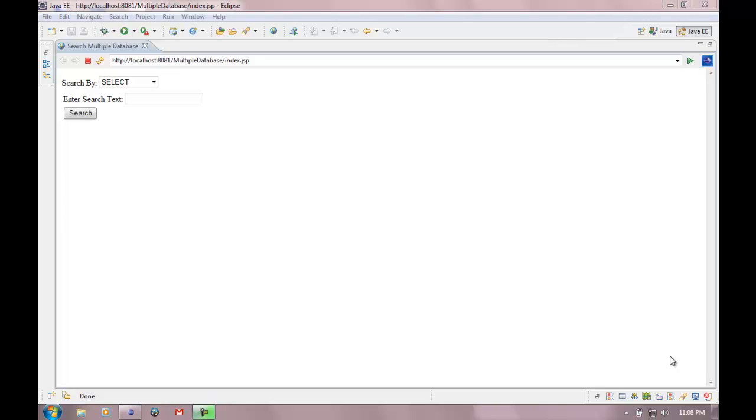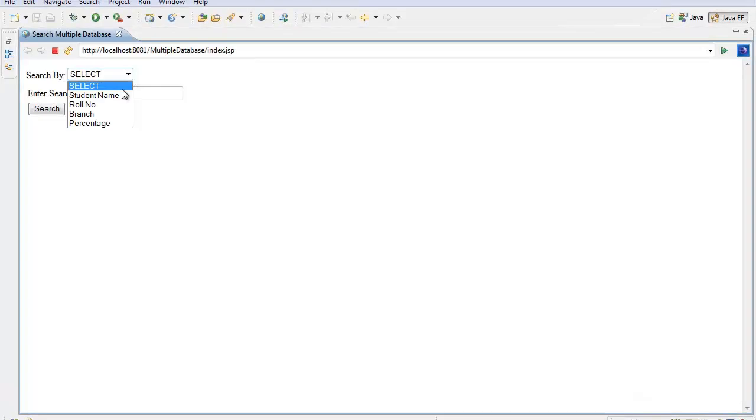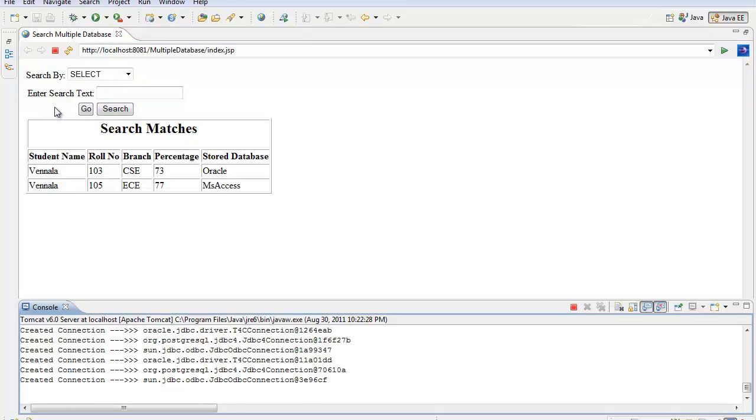Now, let us see the implementation of our project. We are trying to retrieve information pertaining to students from the chosen three databases. We are interested now in searching for the student by their name attribute as student name. The search text being entered is vanilla. The result being displayed is retrieved from Oracle and MS Access.